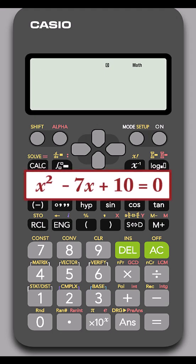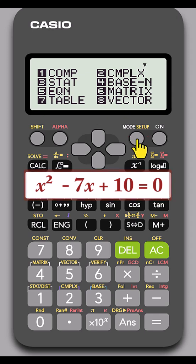To solve this quadratic equation on the Casio FX calculator, start by pressing MODE. Select 5 for equation.